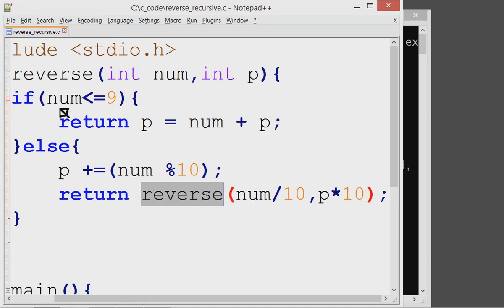Now, this first value is 2 and this is 430. So this time, this condition becomes true. So return value is p is equal to num plus p.